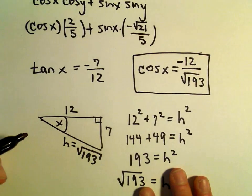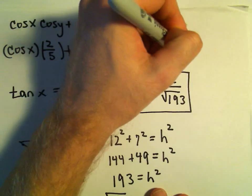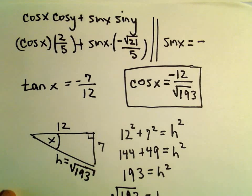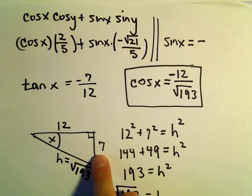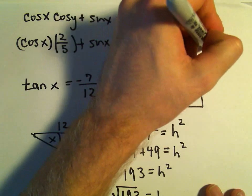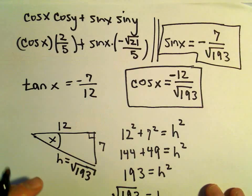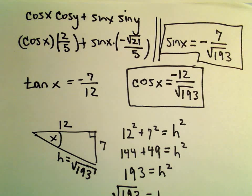Likewise, we can get the value for sine x by doing the same thing. Sine of x is going to be negative because it's in quadrant 4. Sine is the opposite over the hypotenuse. So we'll get that sine x equals negative 7 over the square root of 193.